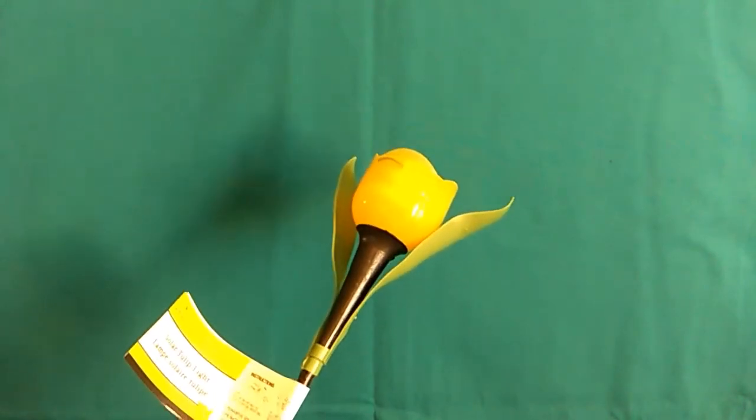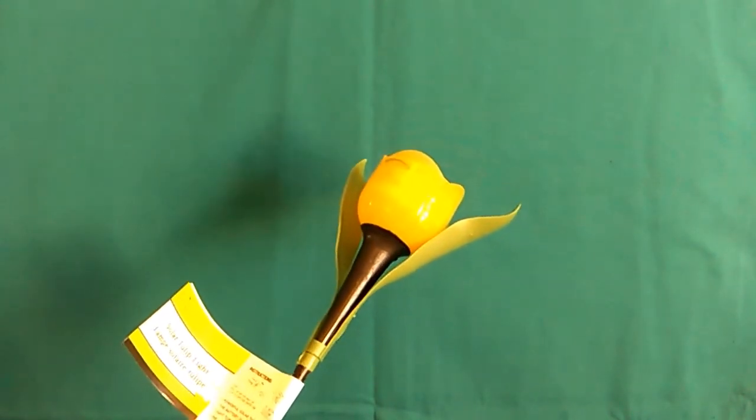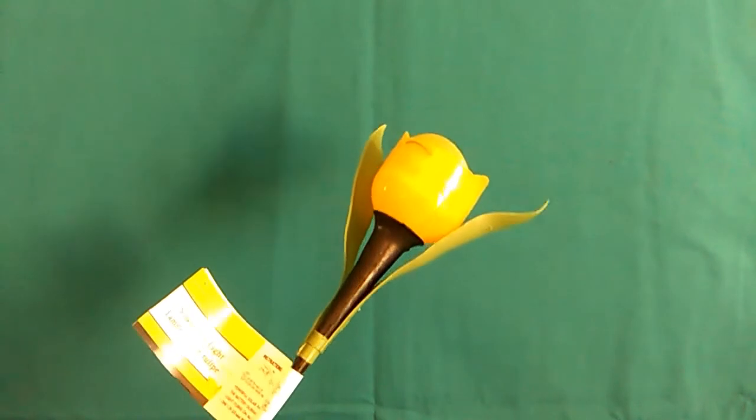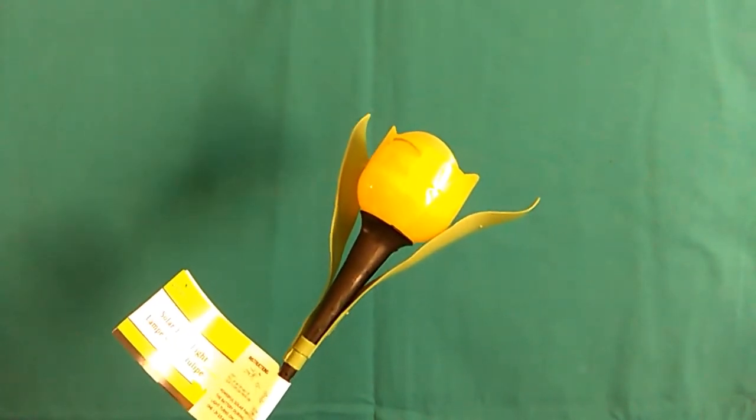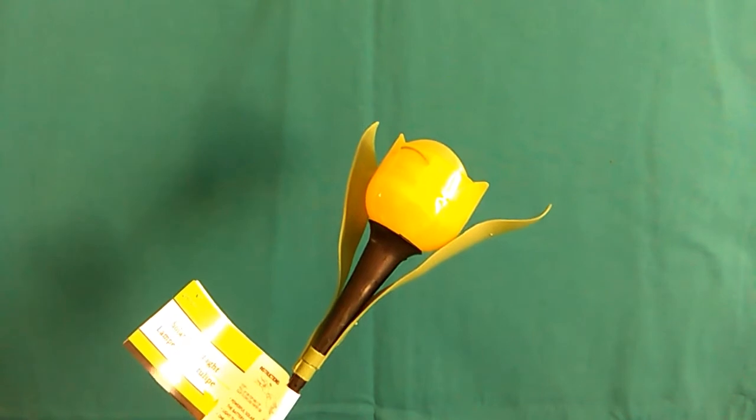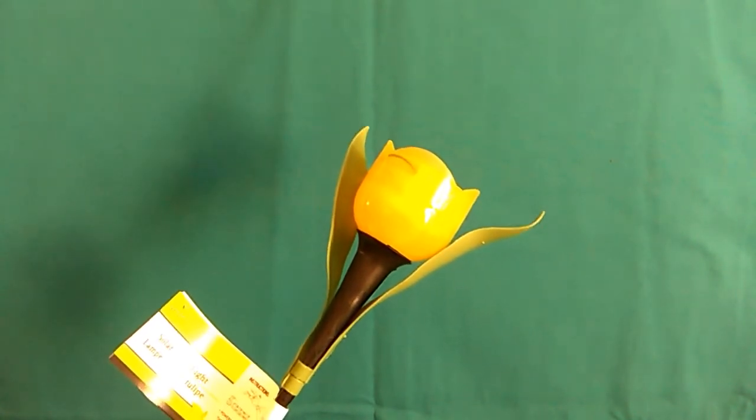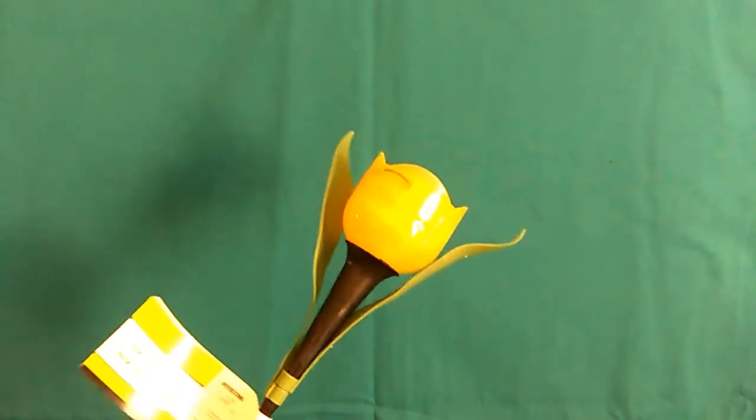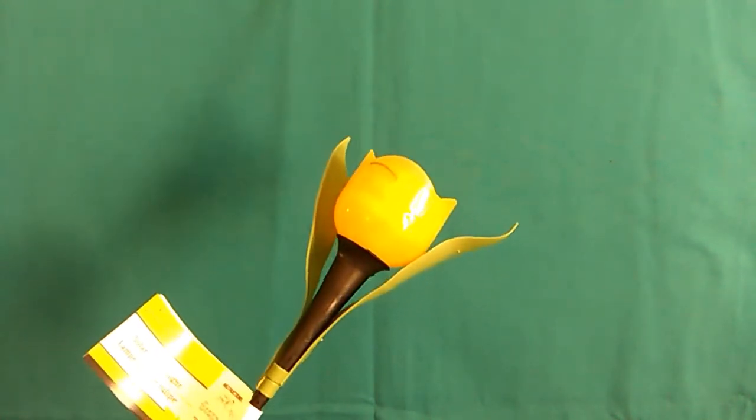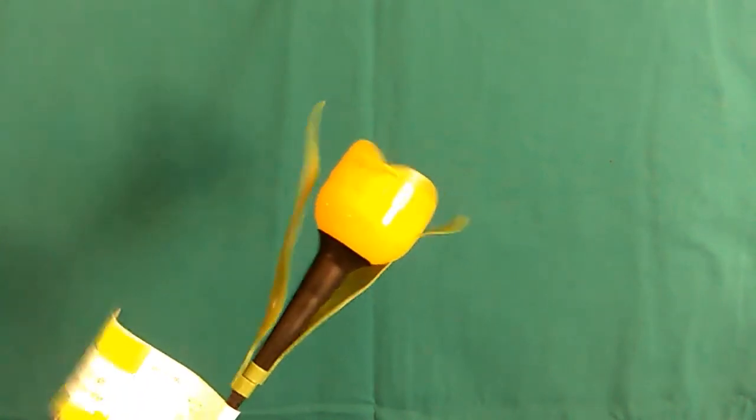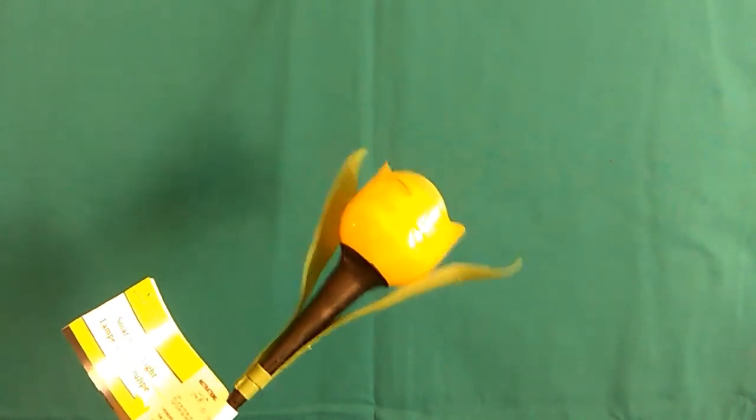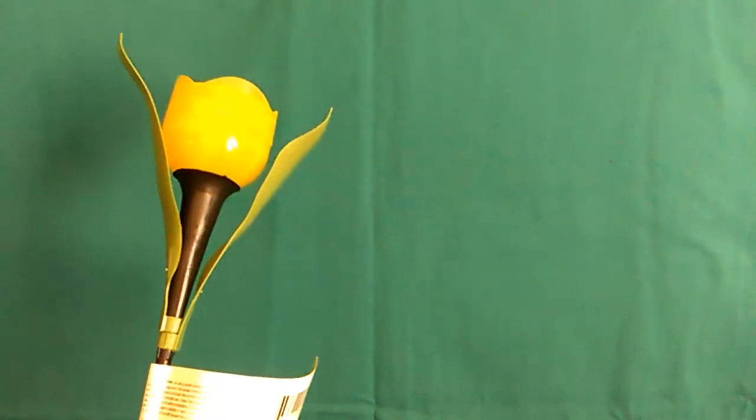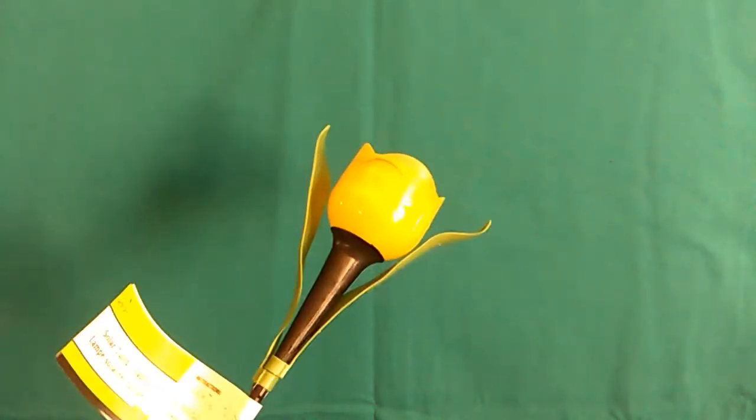When they light up, the yellow ones actually are a brighter light than the pink or the purple. Even though the pink and purple ones are beautiful during the day, the yellow ones are the ones that give out most light that I could tell. So I picked up six of them and I'm excited to put them out this spring.